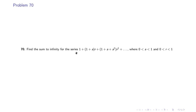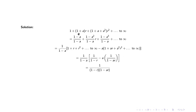Problem 70: Find the sum to infinity of 1 + (1+a)r + (1+a+a²)r² + ..., where 0 < a < 1 and 0 < r < 1. We multiply and divide by (1−a): the first term becomes (1−a)/(1−a), the second becomes (1−a²)/((1−a)·r), and so on. Taking out 1/(1−a), the result splits into (1 + r + r² + ...) minus a(1 + ar + a²r² + ...), giving a final sum of 1/((1−r)(1−ar)).